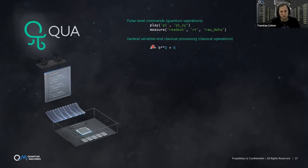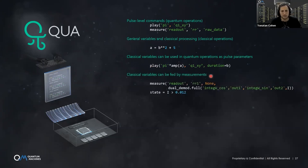We can use these classical variables as the parameters of the pulse. Here we modify the amplitude or duration according to classical variables A and B. Another critical component is that these classical variables can also be fed by measurements of the quantum system. For example, we measure a qubit or resonator, and after doing the demodulation and integration, the result goes into this variable I. This I can then be continuously processed.